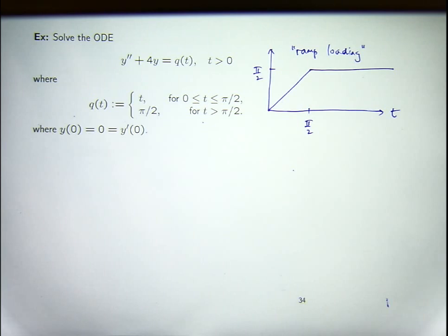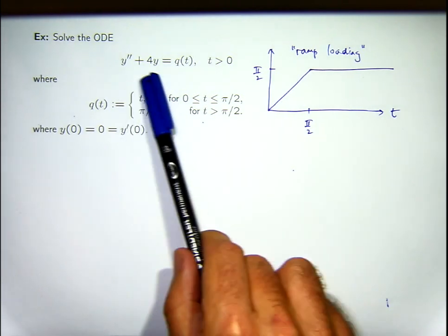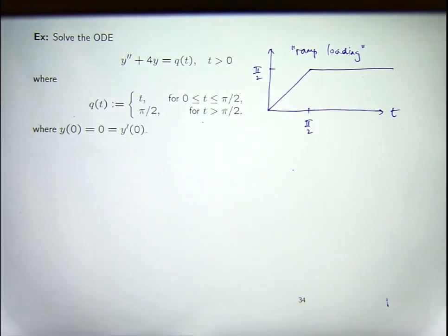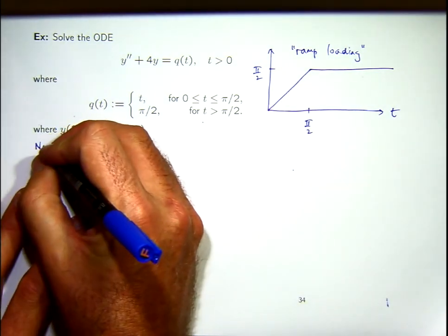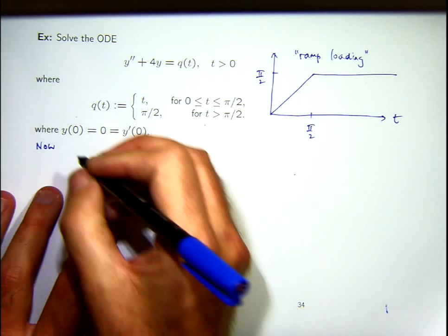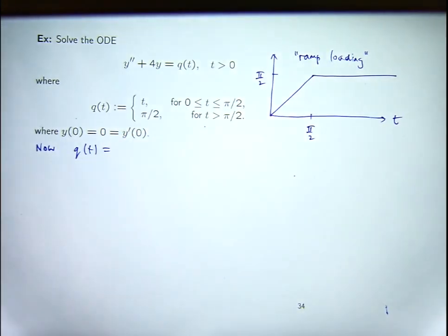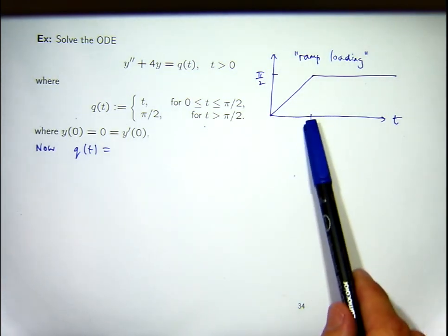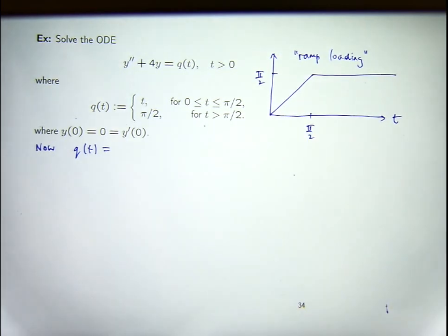A Heaviside step function, or unit step function, is like a switching function and its profile looks like a step. The challenge is to write Q of T in terms of a Heaviside step function. From the picture, something happens at T equals pi on 2 — there's a switch from one function to another function. There's no jump, but the behavior changes.